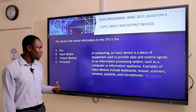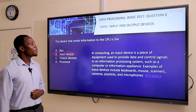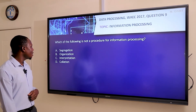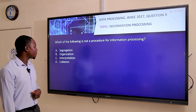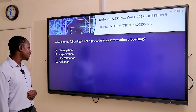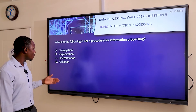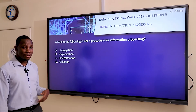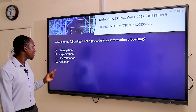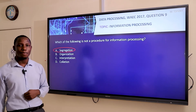Moving to question nine: which of the following is not a procedure for information processing? From the options we have segregation, organization, interpretation, and collation. Organization, interpretation, and collation are all procedures in processing information. Segregation is not part of the information processing procedure. Therefore our answer is A, segregation.